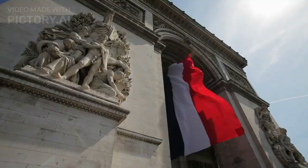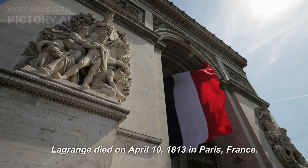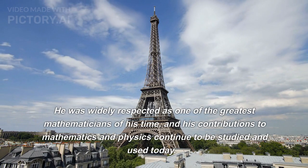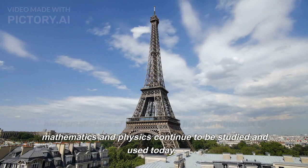Lagrange died on April 10, 1813 in Paris, France. He was widely respected as one of the greatest mathematicians of his time, and his contributions to mathematics and physics continue to be studied and used today.